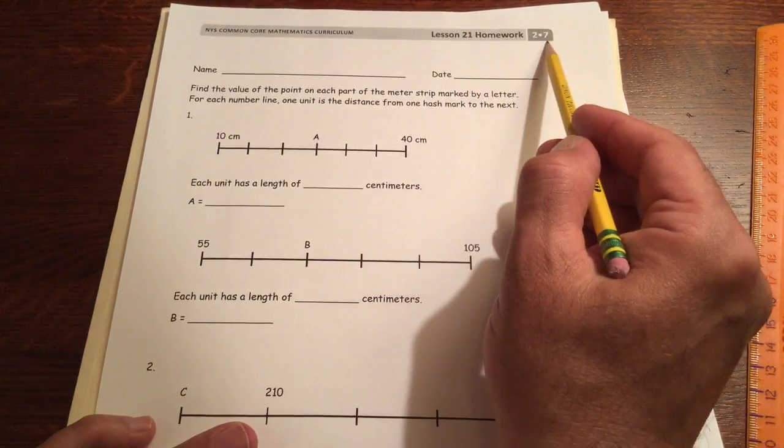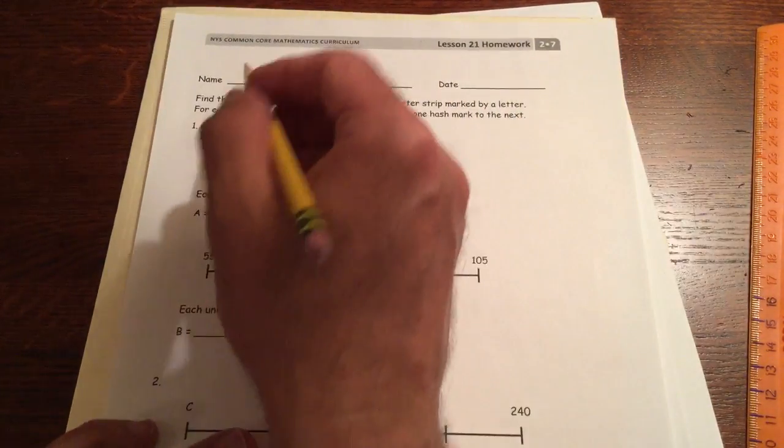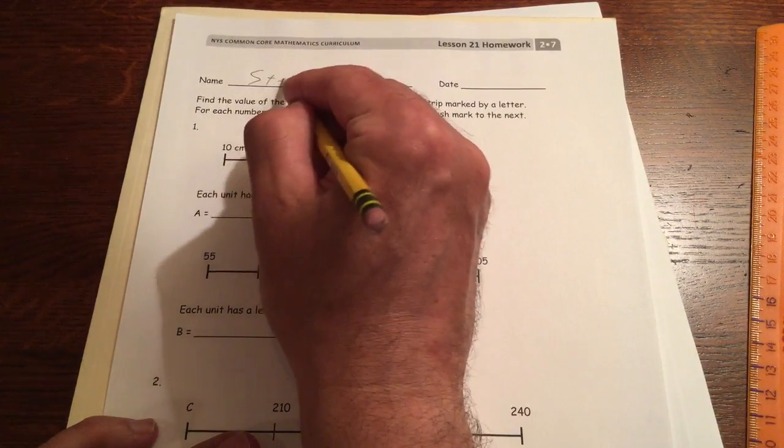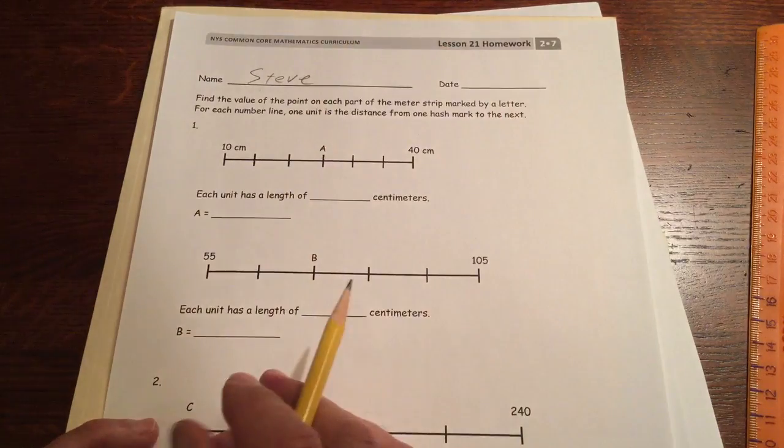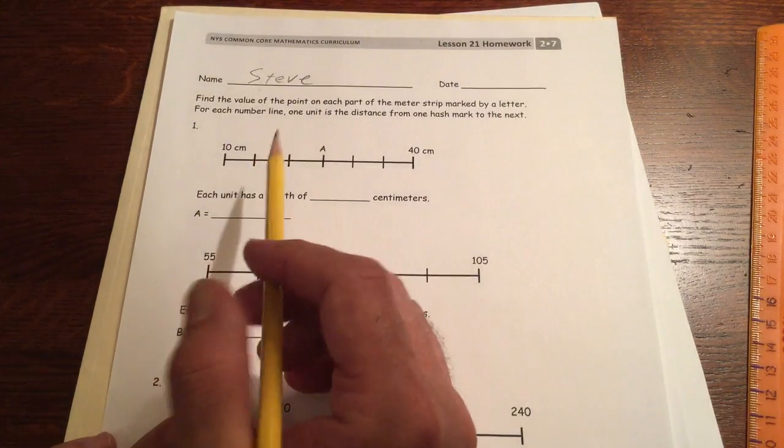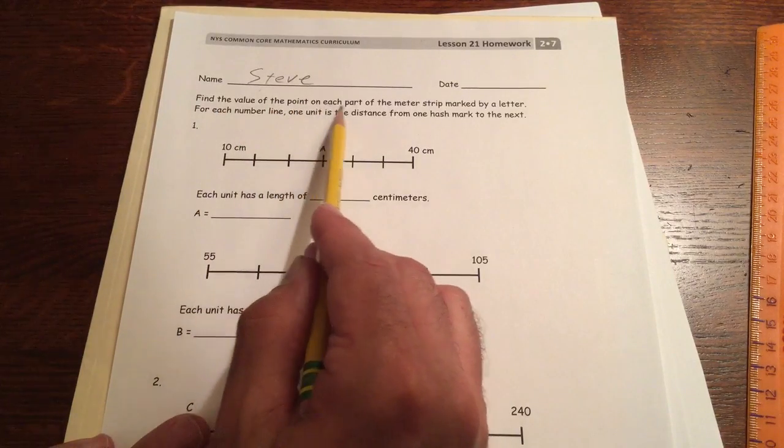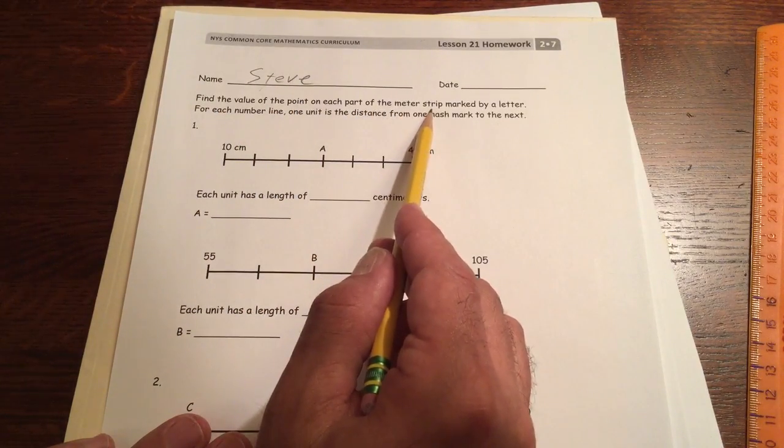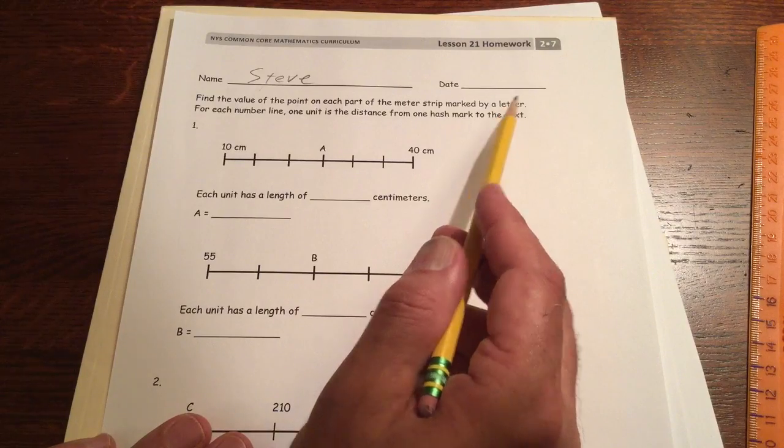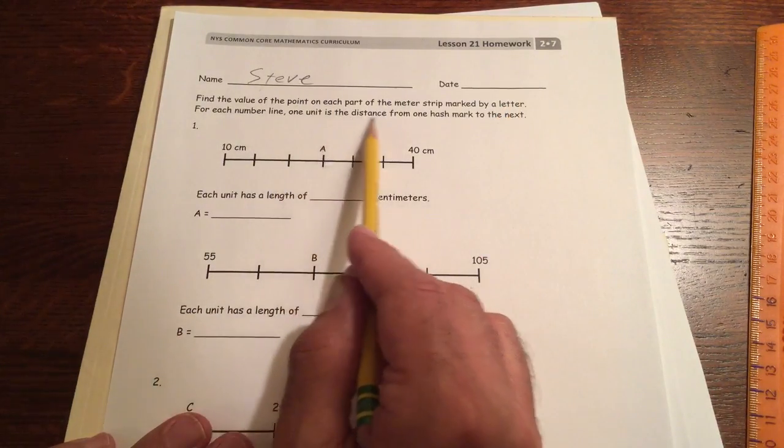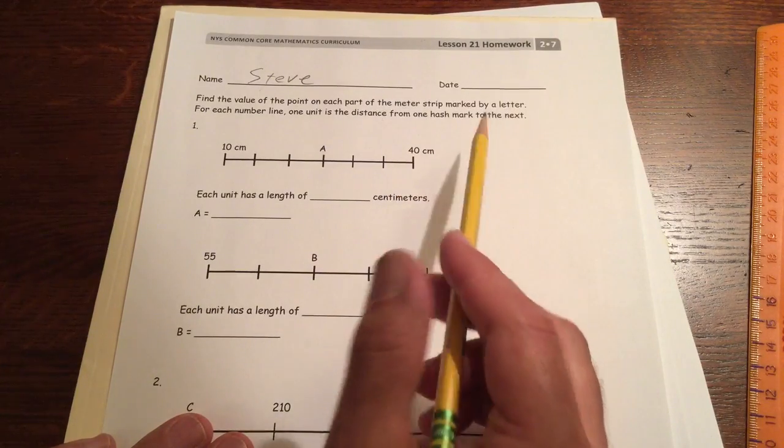This is lesson 21 homework, module 7 of grade 2. Write your name. Do that first so you don't forget it later. Then we're finding the value of the point on each part of the meter strip marked by a letter. For each number line, one unit is the distance from one hash mark to the next.